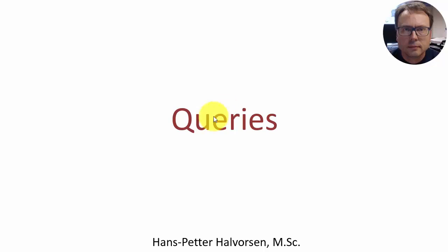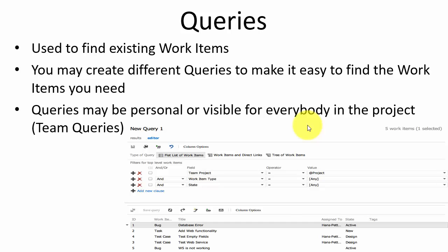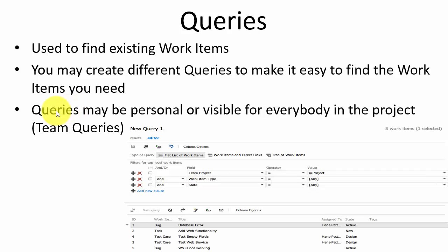The next thing we want to do is make some queries. If you enter lots of bugs in the system it could be difficult to find the ones you want, so queries are a way to structure bugs into lists. You can use queries to find existing work items, and create different queries to make it easier to find what you need. You can also choose whether queries are personal or visible to everyone as shared team queries.